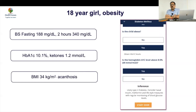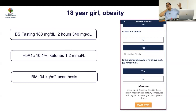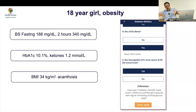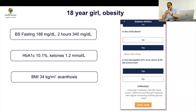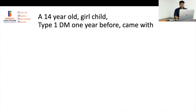Essentially you are looking at three things: age — under 1 year or 1 to 18 years; DKA — yes or no; obesity — yes or no. Just these three parameters and most diagnoses emerge. Then you do two tests: GAD antibody and genetic study. That is the complete algorithm.